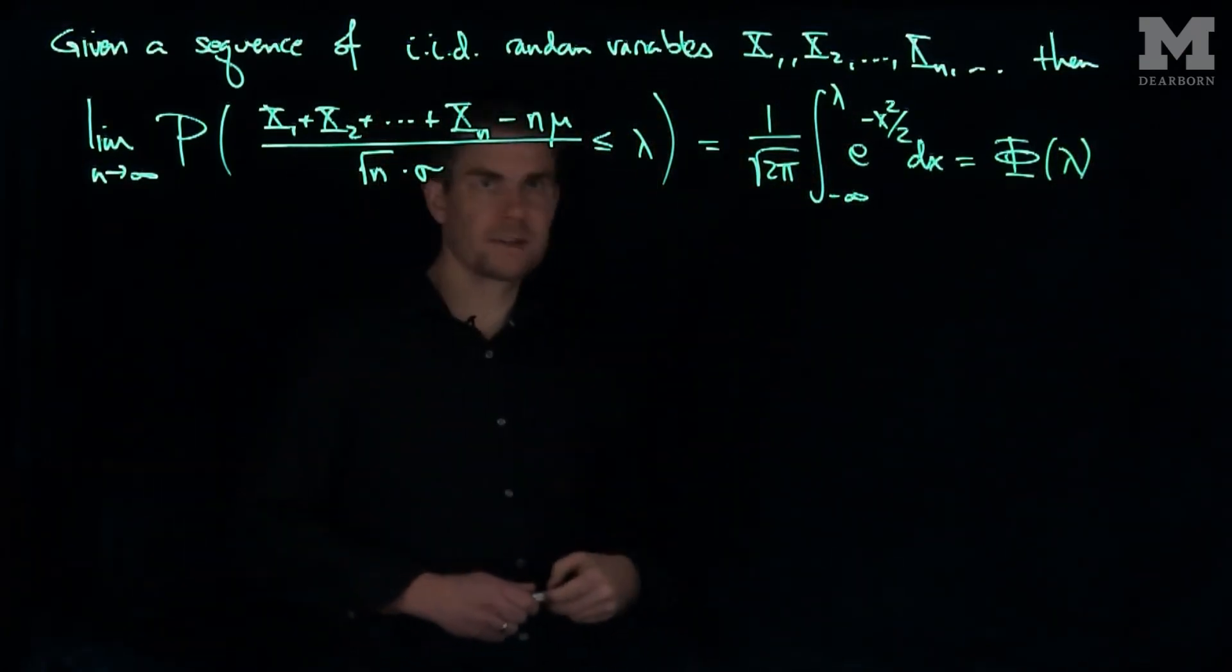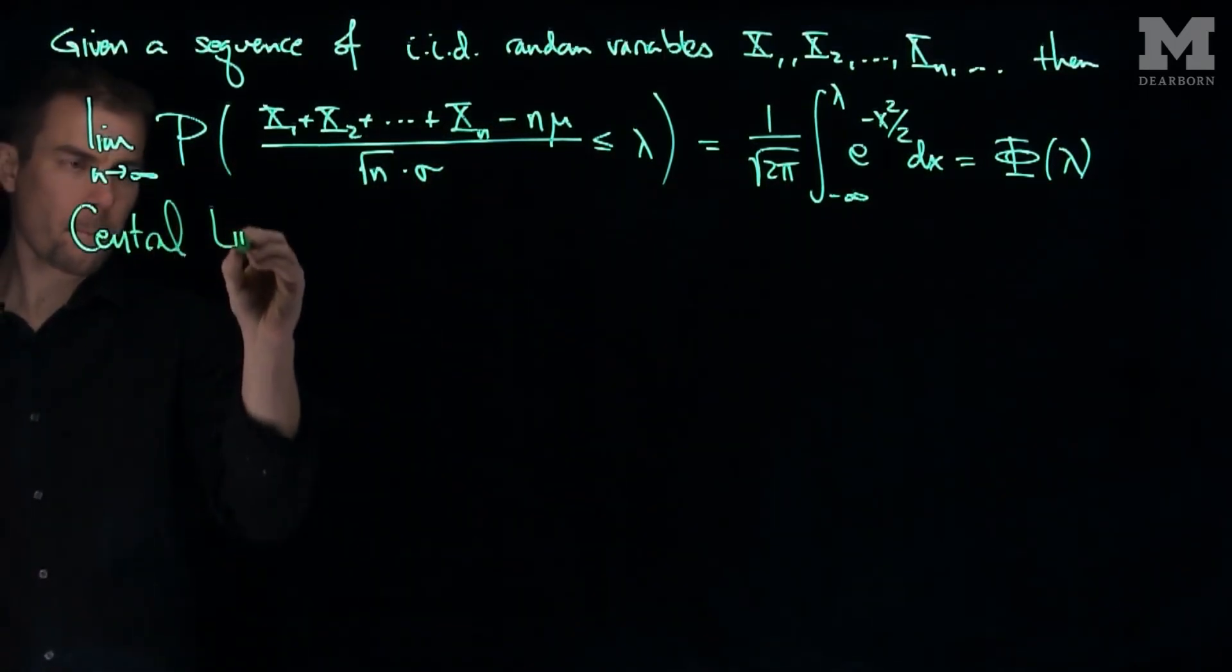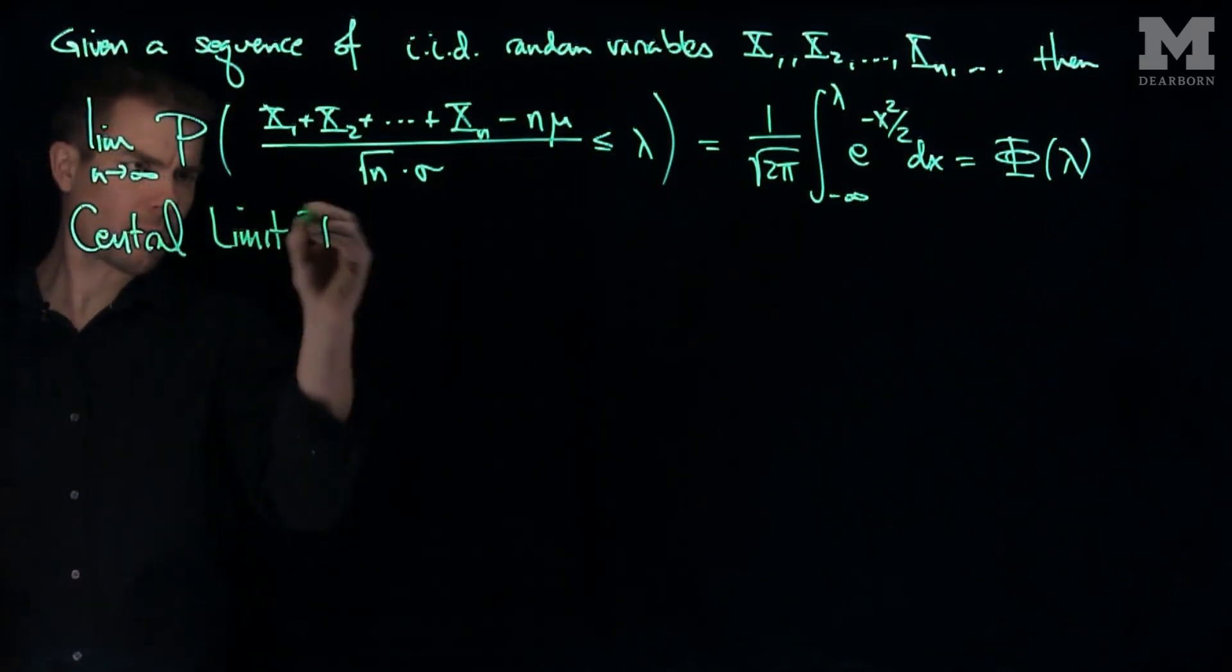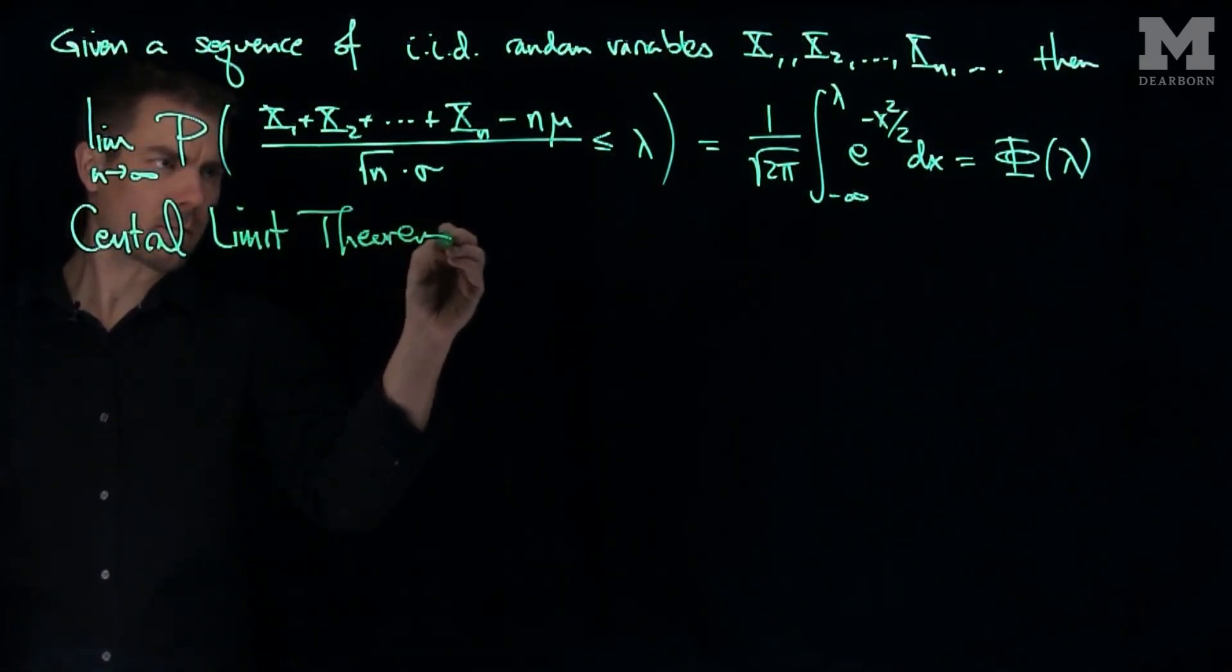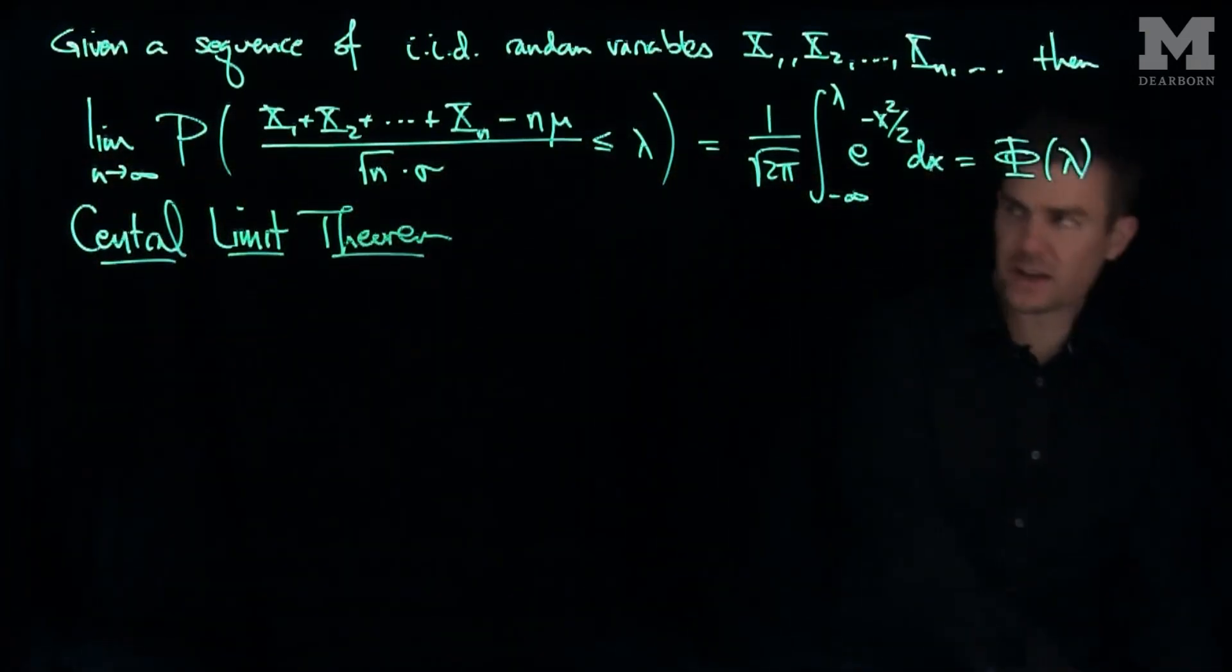And so let's make a few notes about this. This is referred to as the Central Limit Theorem, one of the most important results in probability. And so what does this say?